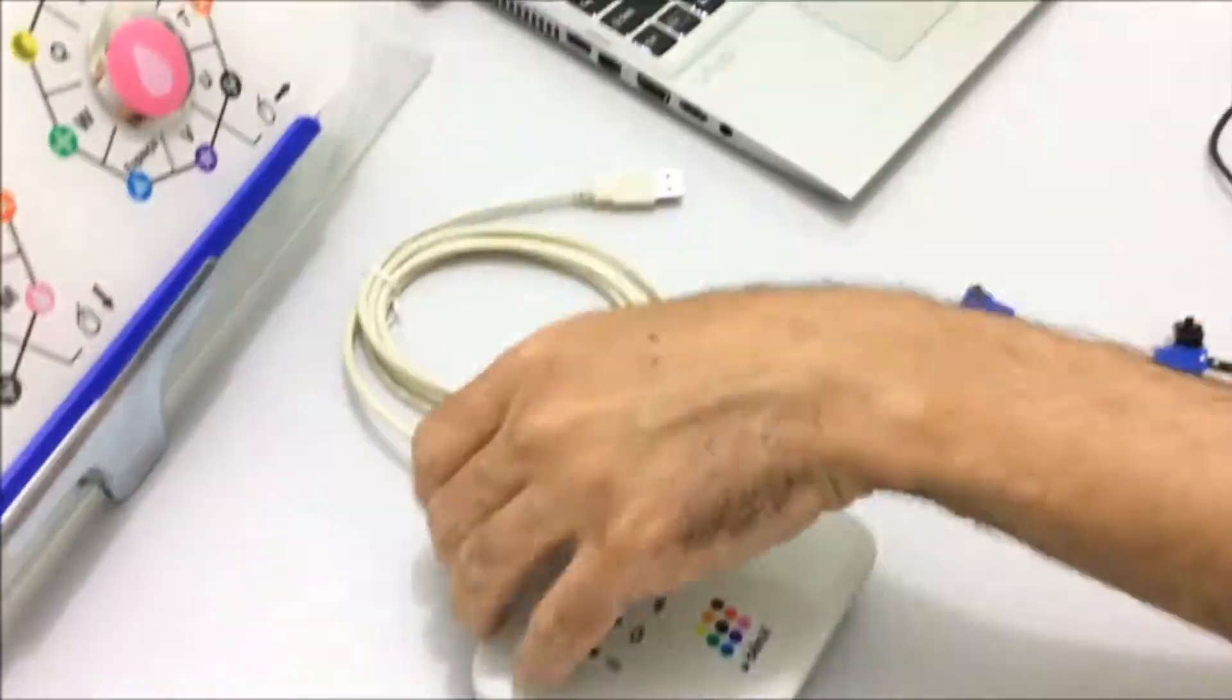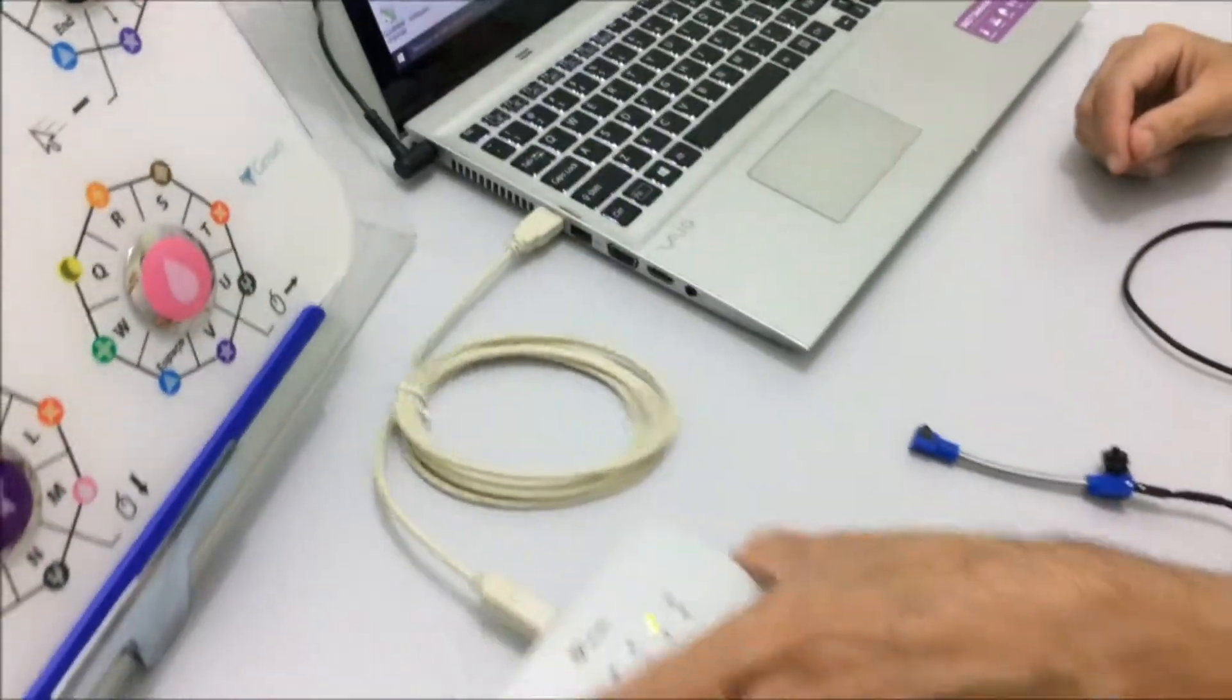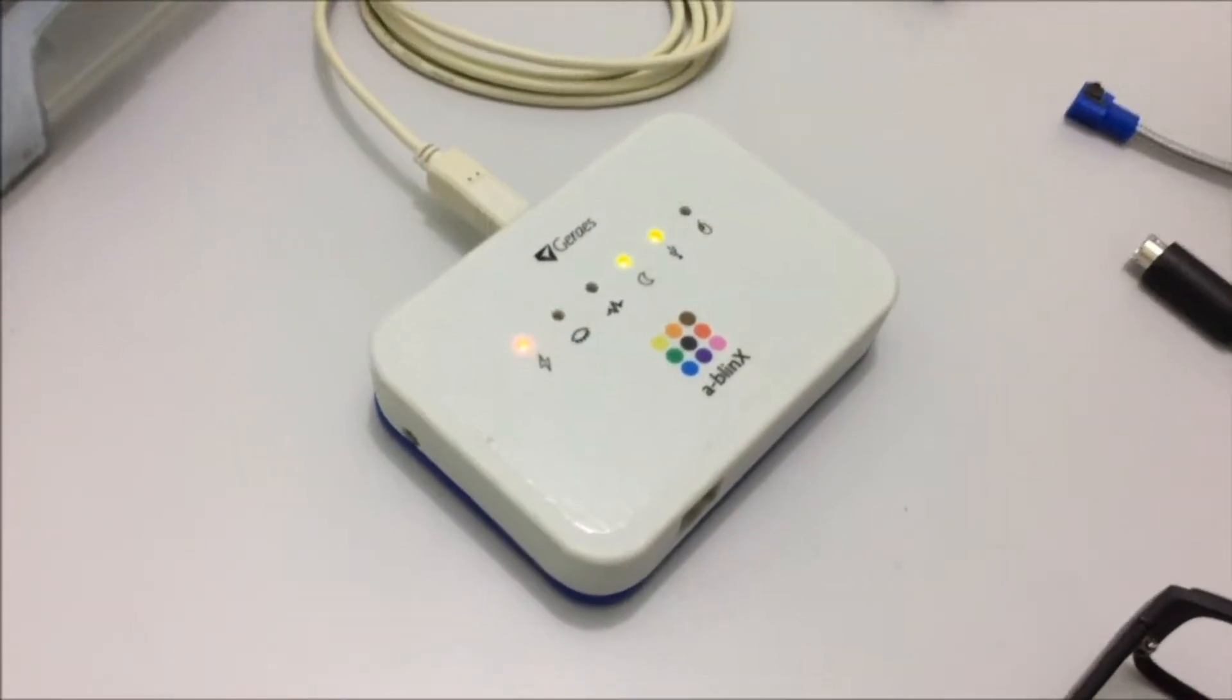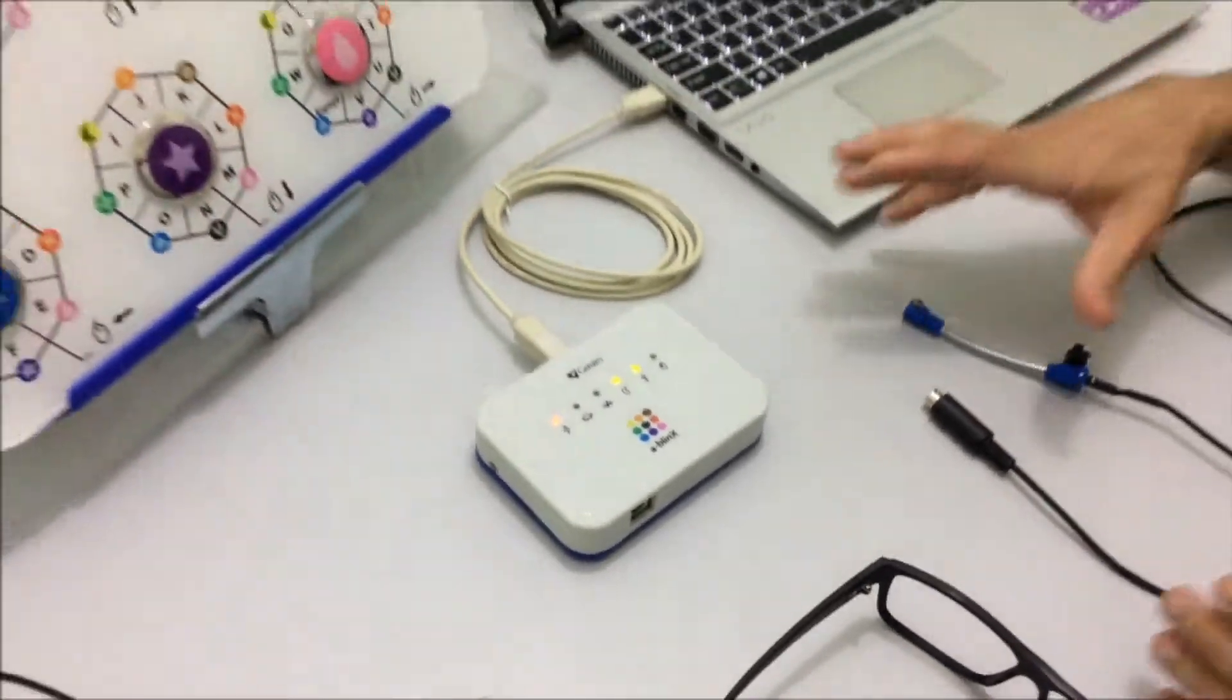To turn on Blink X, we use the USB cable, plugging the squared end into Blink X and the flat end to any USB port on your computer. When you plug it in, it will turn on the lights and make a little noise.